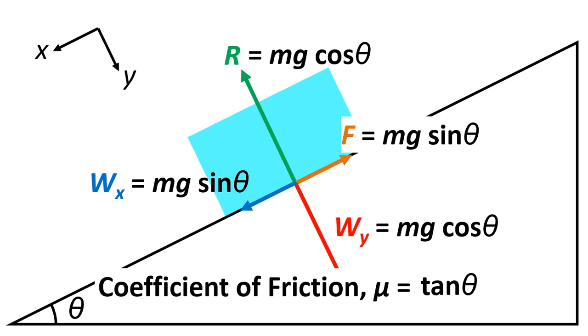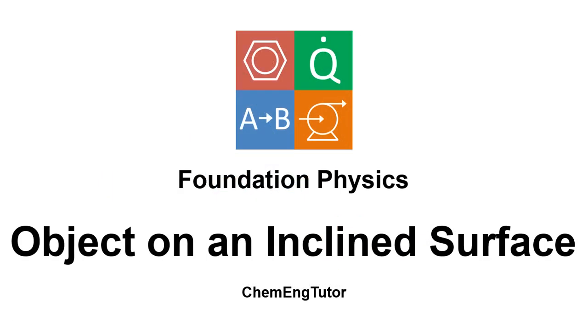Also sin theta divided by cos theta equals tan theta. So we've simplified this now and we've answered the question because we've now got an equation that gives us the value of the coefficient of friction based on the parameters that we had. The coefficient of friction mu equals tan theta. So that's been a video about an object on an inclined surface.